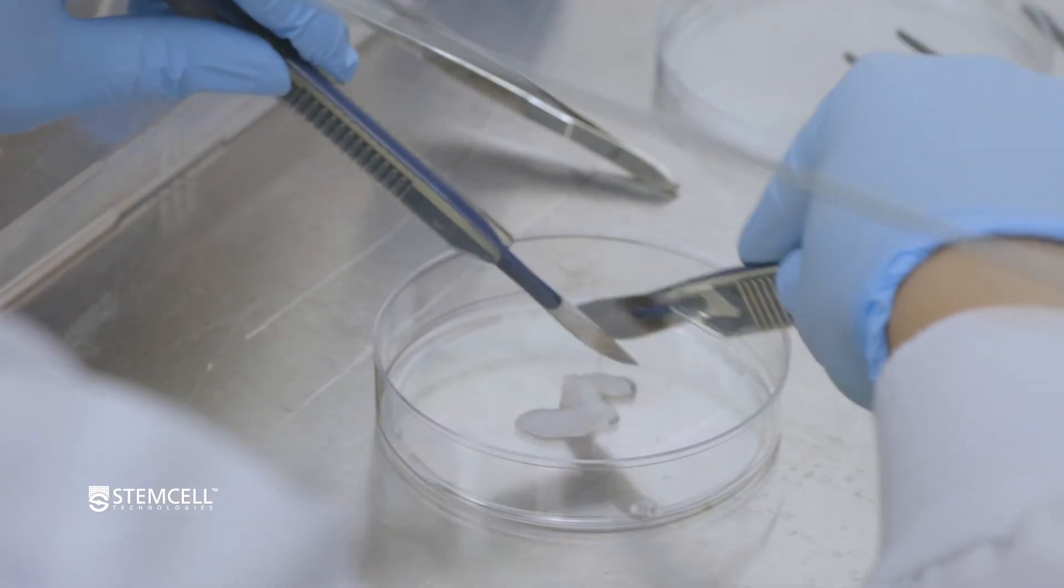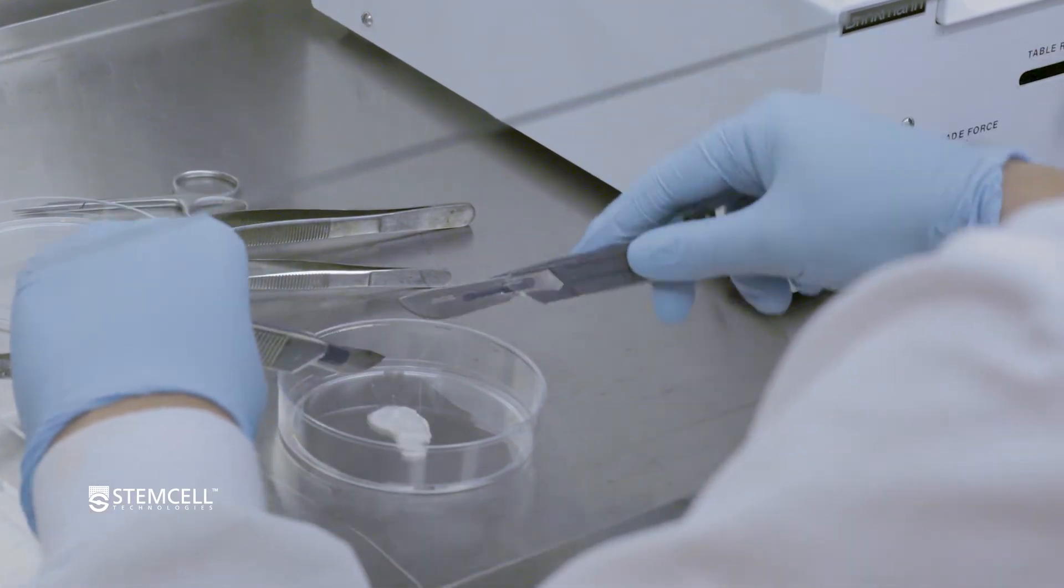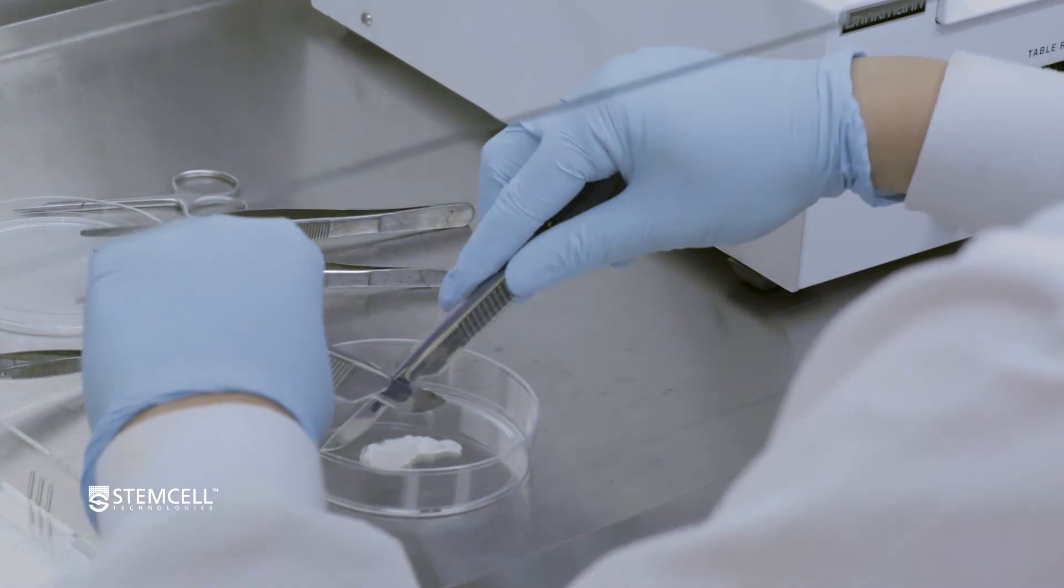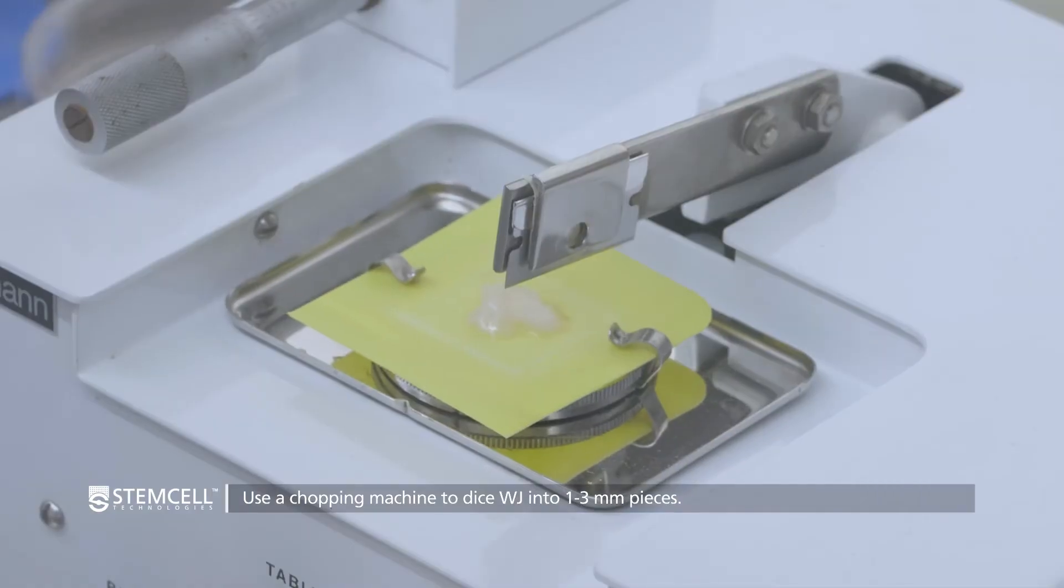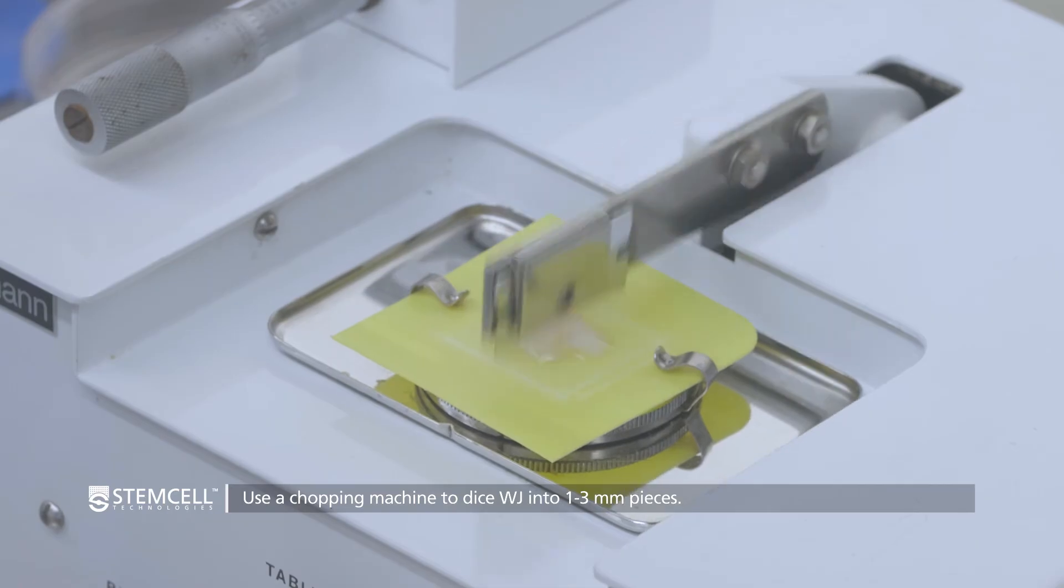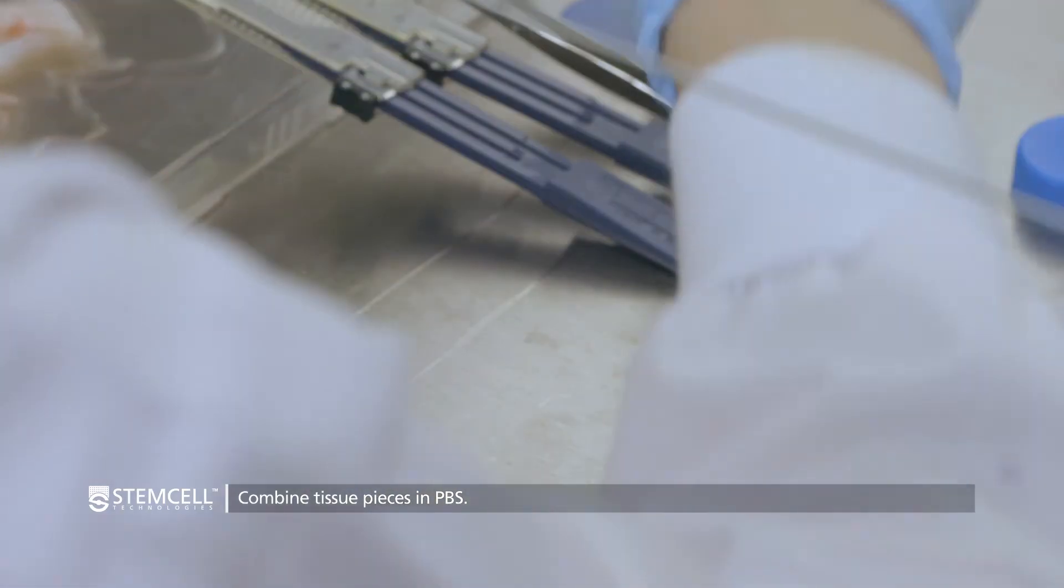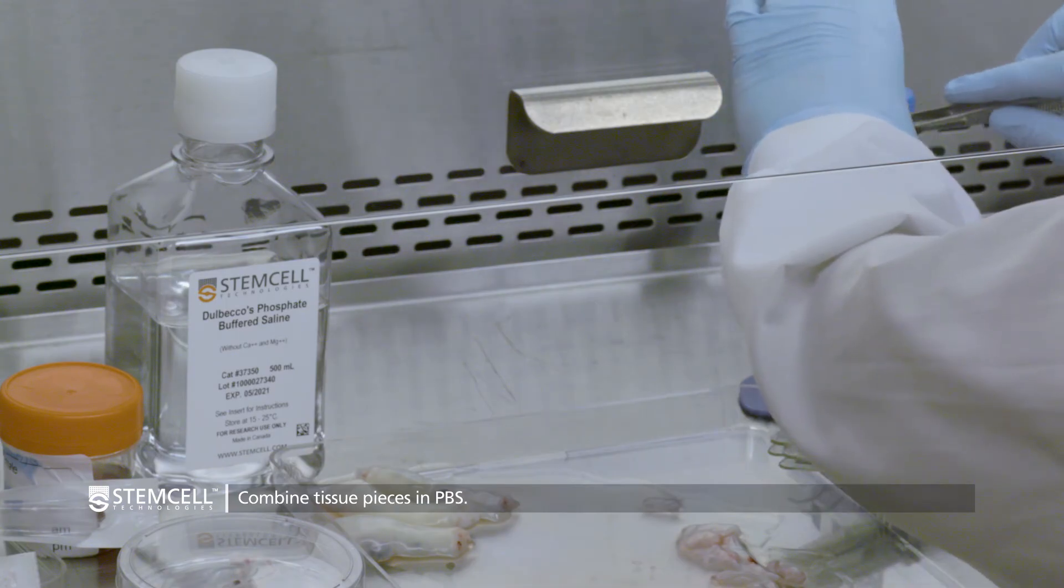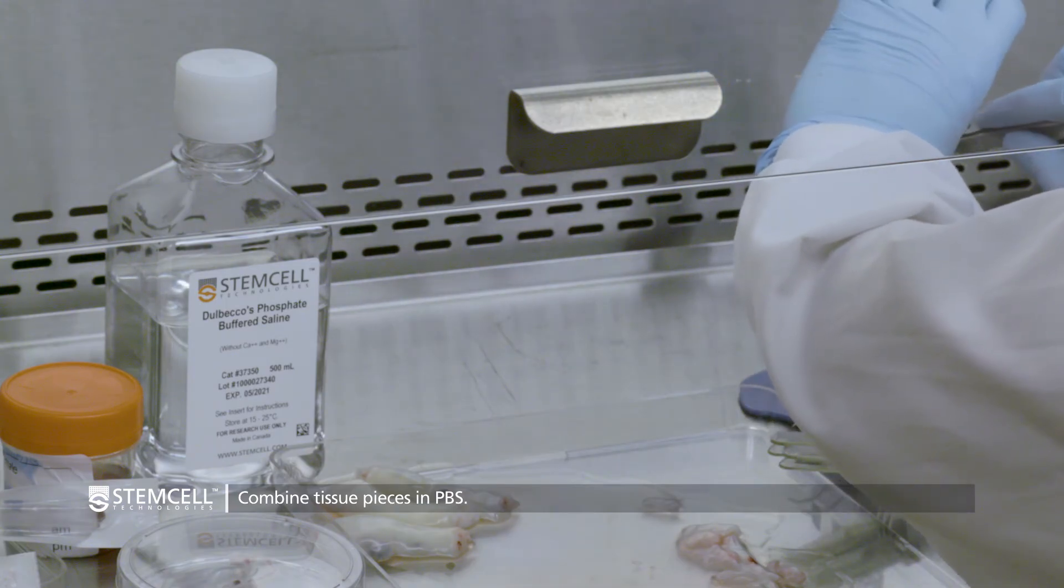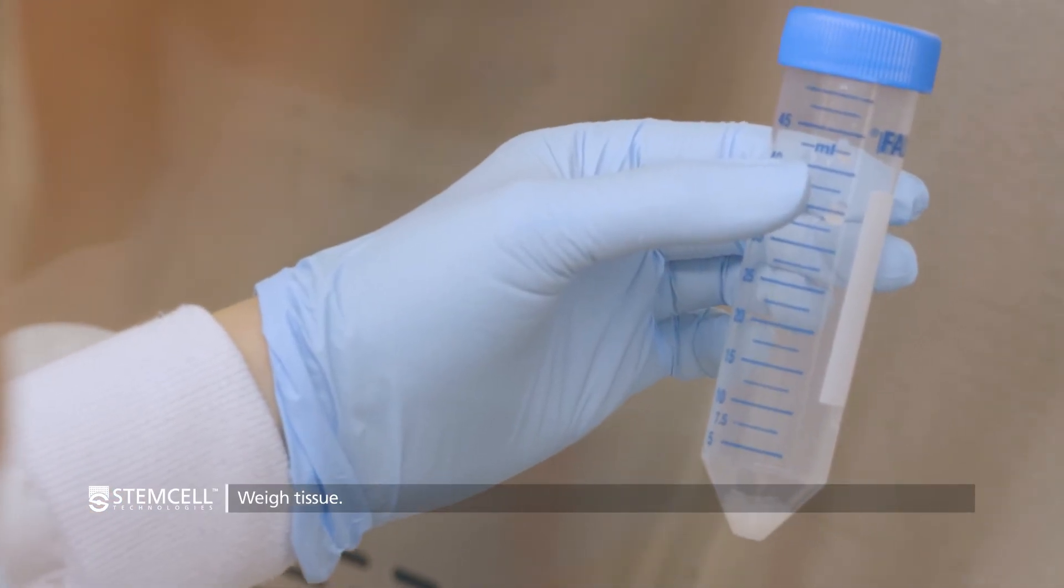Dice perivascular Wharton's jelly into approximately one to three millimeters squared pieces. This can be done using a scalpel, scissors, or a tissue chopping machine, such as a McIlwain tissue chopper. Keep tissue pieces hydrated in PBS. Combine all tissue pieces into a 50 ml falcon tube in a minimum volume of PBS and record the total weight.